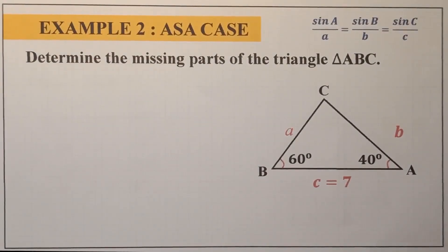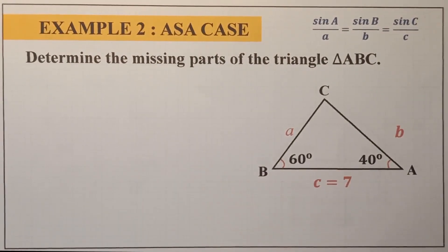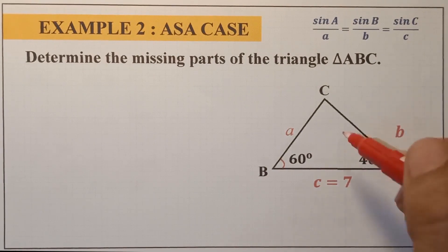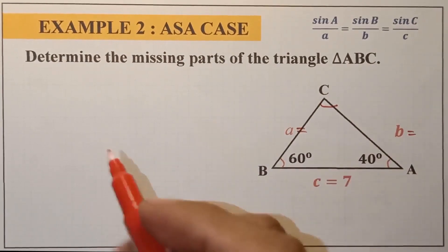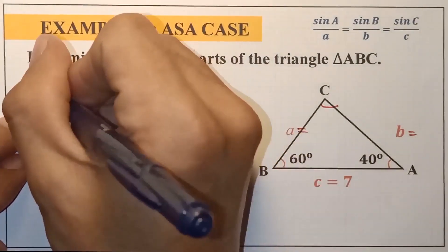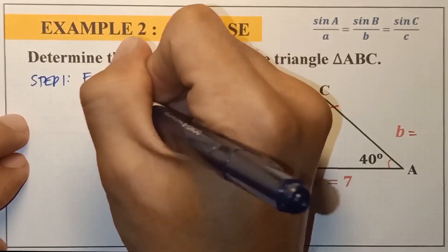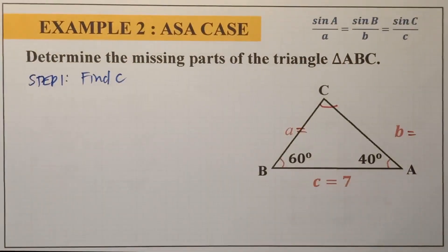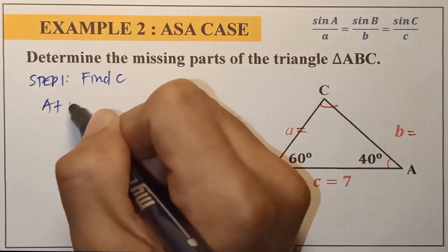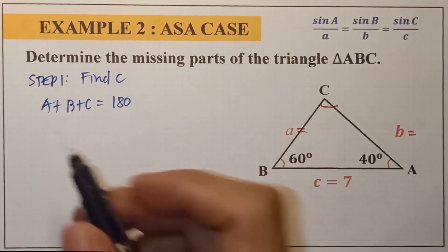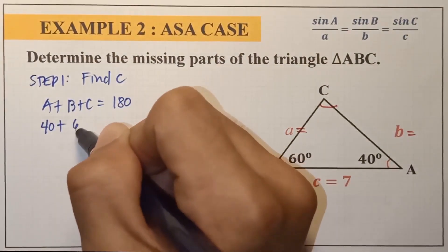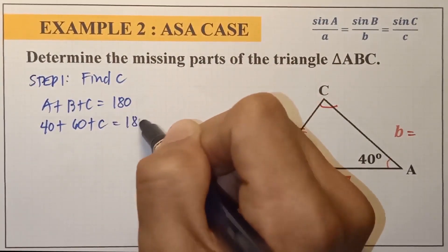We're now on example number two, which is the ASA case — the Angle-Side-Angle. With this one, we need to determine the missing parts of triangle ABC. The missing parts are angle C, and we also need to find sides b and a. For step one, we need to find C. The sum of all angles is equal to 180 degrees, so angle A is 40 and angle B is 60, plus C equals 180.